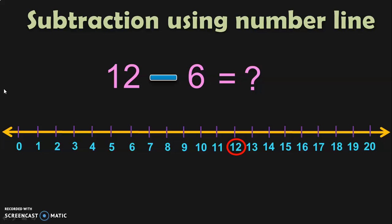Subtraction means we are going to move in the backward direction. For addition using a number line we moved forward, but as it is subtraction, we are going to jump 6 times in the backward direction from 12: 1, 2, 3, 4, 5, 6. When you jump 6 times in the backward direction, you arrive at the number 6. So 12 minus 6 gives you the answer 6.